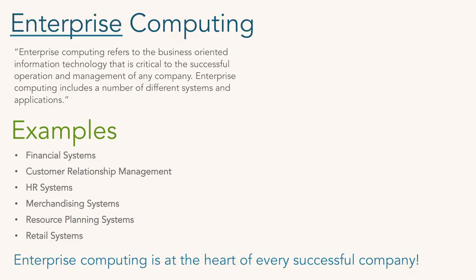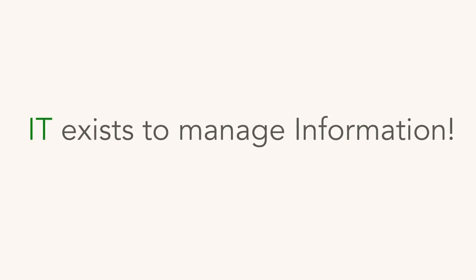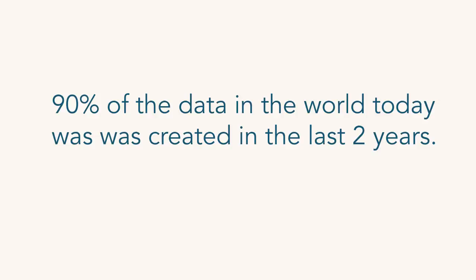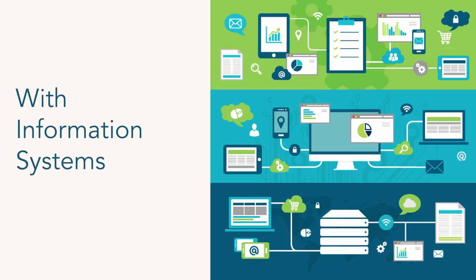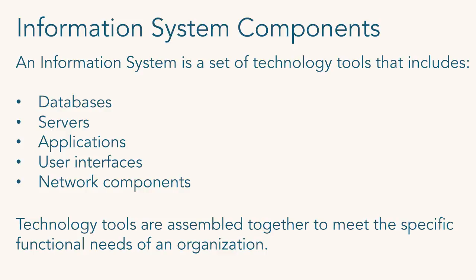In wrapping up: IT exists to manage information — that's the core takeaway. Ninety percent of the data in the world was created in the last two years, which gives you some context for where we stand in the evolution of information technology. The party is just getting started — we're going to create a lot more data, and this is a great time to consider information technology as a career path. We manage information with information systems, and information systems are made up of all the core IT components such as databases, servers, and applications. Thanks so much — stick with us for the next program.